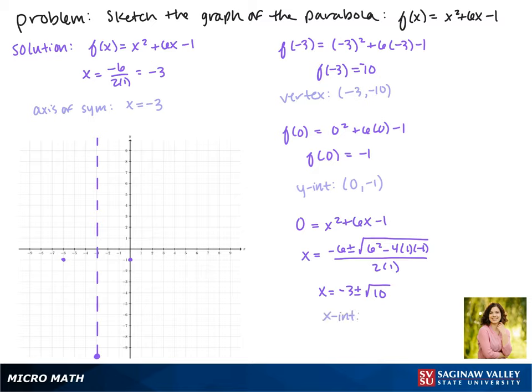This is not very easy to graph, though, so we'll plug it into our calculators. We get the points (0.16, 0) and (-6.16, 0). So those points are about here and here.